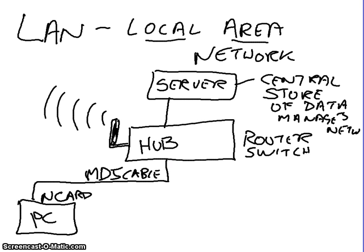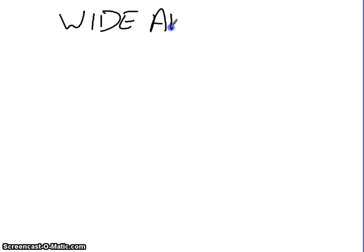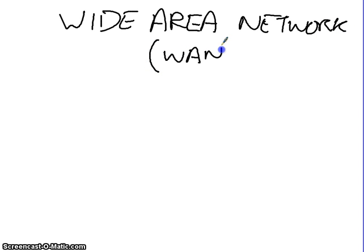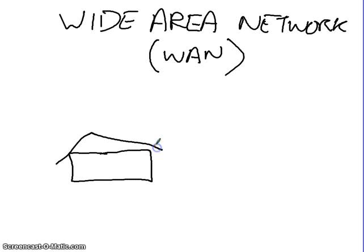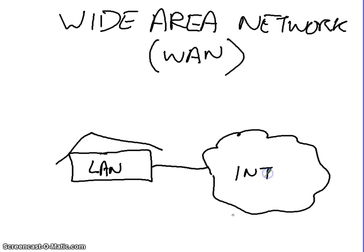All this stuff, before going to the internet, is part of the local area network. When we talk about a Wide Area Network, otherwise known as a WAN, we start to talk about the internet. So you have a little local area network — that's your house, that's your LAN — and from your LAN you connect to your internet service provider, or ISP, and that then takes you on to the internet. The internet is basically a set of connected computers or computer networks. All these LANs join together, create one massive network, and it's called a Wide Area Network.